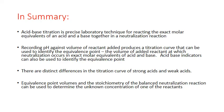In summary, acid-base titration is a precise laboratory technique for reacting exact molar equivalents of an acid and a base together in a neutralization reaction. Recording pH against the volume of reactant added produces a titration curve used to identify the equivalence point — the volume at which neutralization occurs in exact molar equivalence. Acid-base indicators can also identify the equivalence point, and there are distinct differences between titration curves of strong and weak acids. Equivalence point volumes and reaction stoichiometry can be used to determine the unknown concentration of one of the reactants.